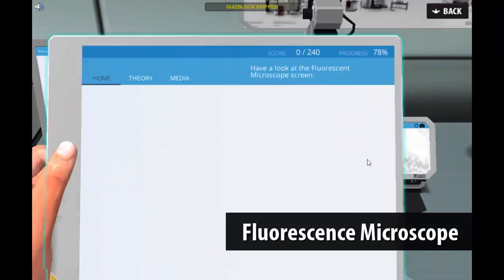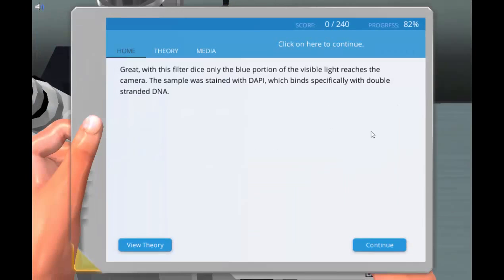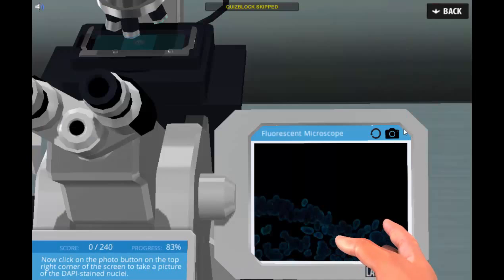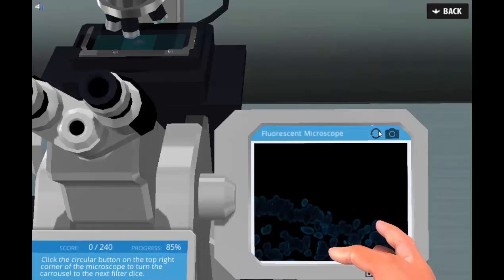Students also learn about fluorescence staining techniques and how they can be used to visualize specific structures. For example, by staining the DNA with DAPI, students can easily identify a cell's nucleus.